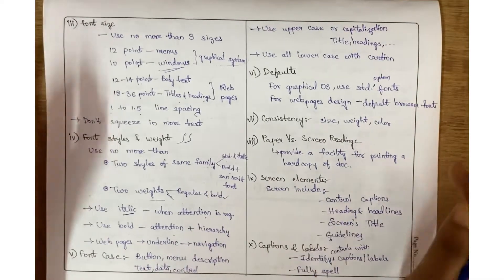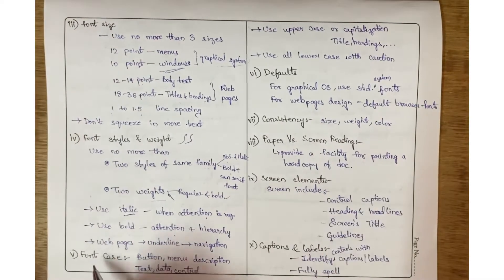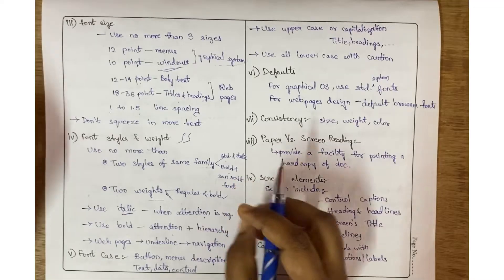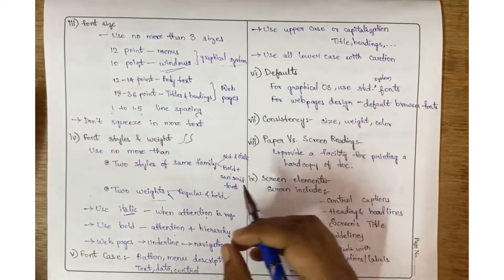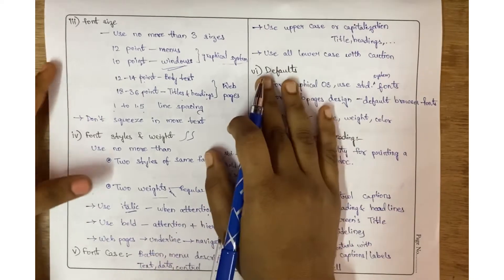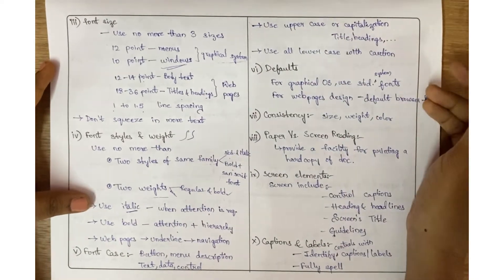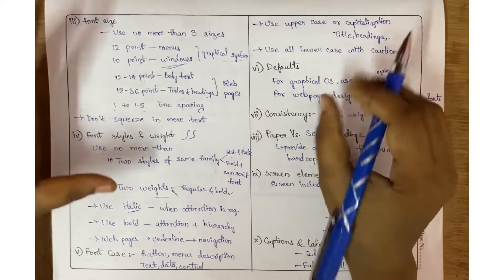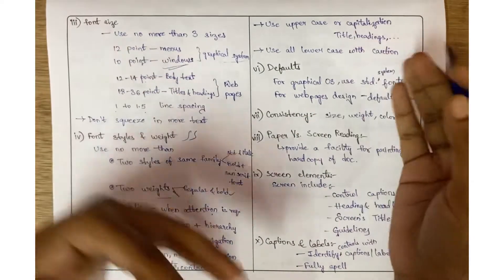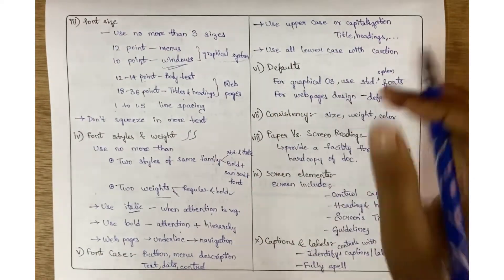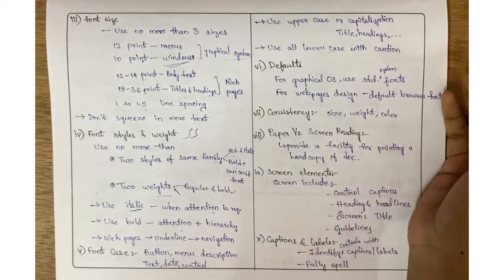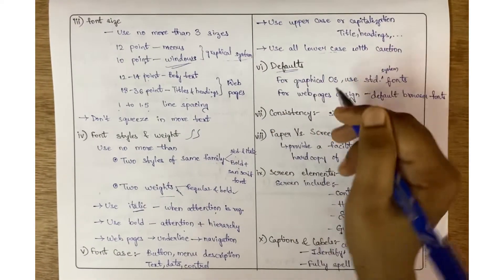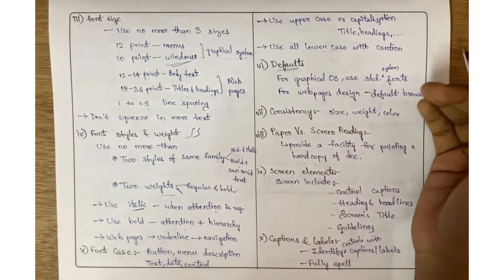Font case includes button descriptions, menu descriptions, and all these things. Use uppercase or capitalization for specific words wherever required. Use all lower cases with caution, meaning whenever it is necessary only.